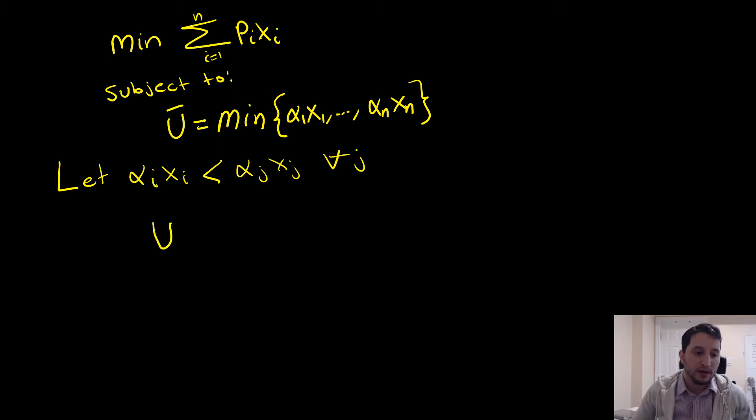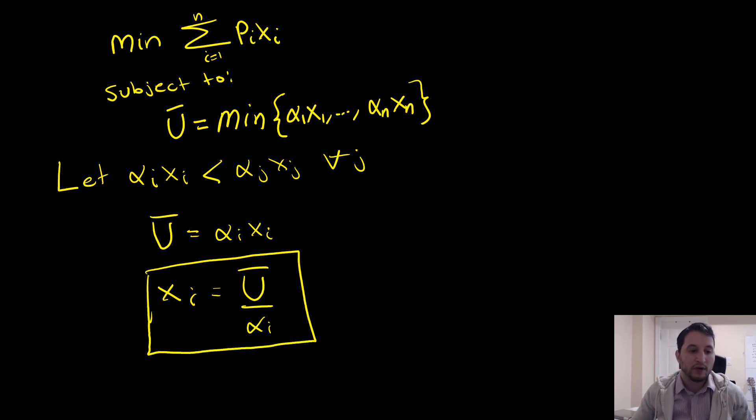So we note that we have the following equation here and we get our Hicksian demands simply by having u bar all over alpha i, right? So this is how you solve for your Hicksian demands in an n-goods case. And this is where expenditure is minimized.